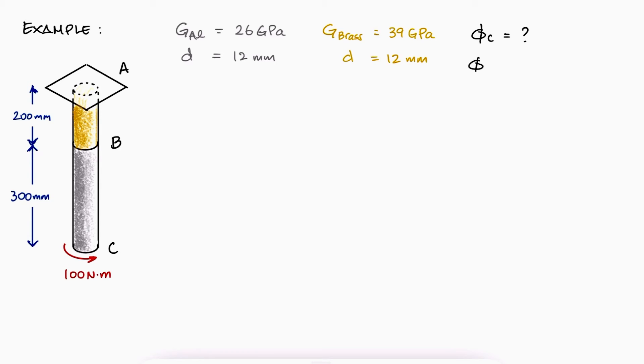If A is the wall, A is not rotating, so it makes sense to find phi C as phi AC. Phi AC is equal to phi AB plus phi BC. For this, we need TAB and TBC. A cut from C to B will give us TCB, which remember, we assume to be positive.